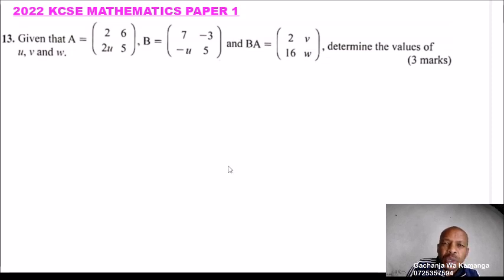So number 13, we are told, given that A is a matrix equals to 2, 6, 2U, 5, B equals to 7, -3, -U, 5, and BA equals to 2V, 16W, determine the values of U, V, and W.